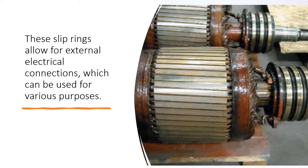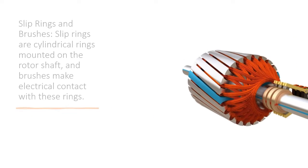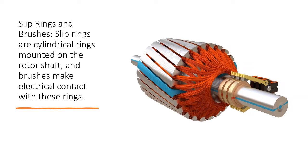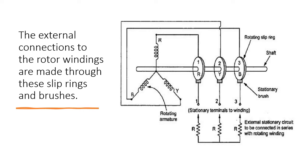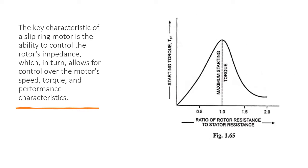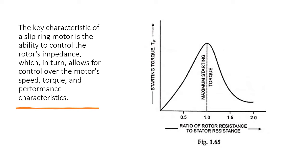These slip rings allow for external electrical connections, which can be used for various purposes. Slip rings and brushes - Slip rings are cylindrical rings mounted on the rotor shaft, and brushes make electrical contact with these rings. The external connections to the rotor windings are made through these slip rings and brushes.